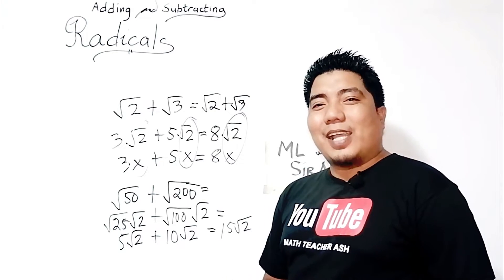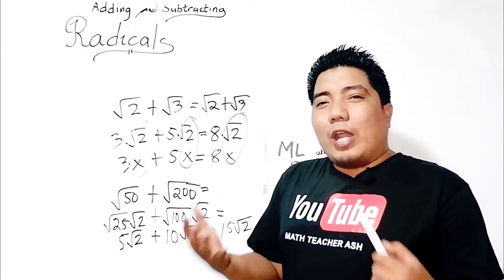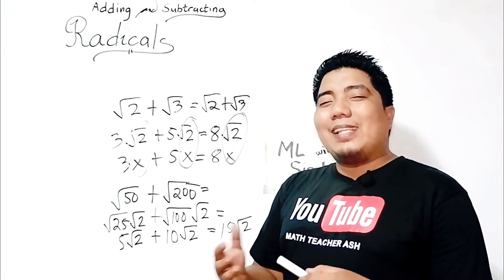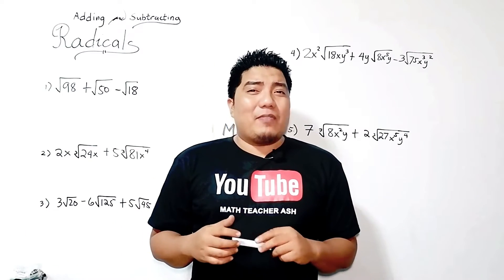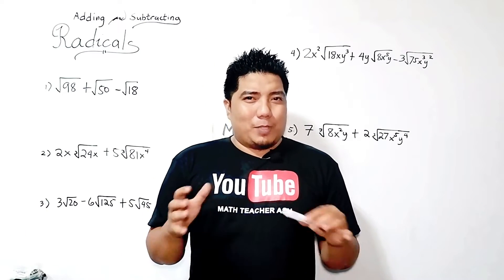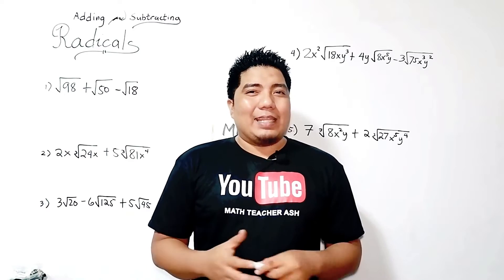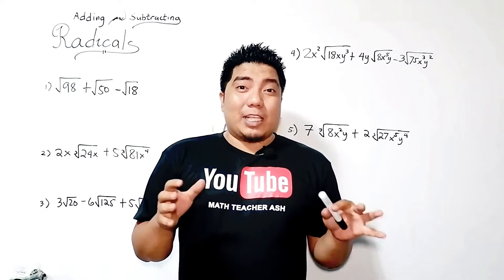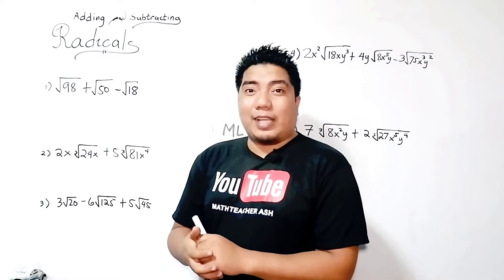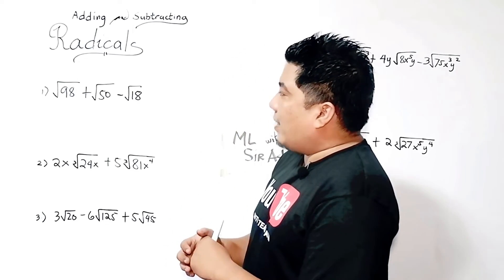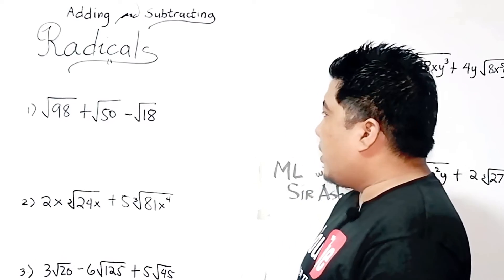Let us consider some exercises for you to have a deeper understanding on how to add and subtract radicals. We have 5 problems to be solved by simplifying radical expressions through addition and subtraction. Our first example is: square root of 98 plus square root of 50 minus square root of 18.